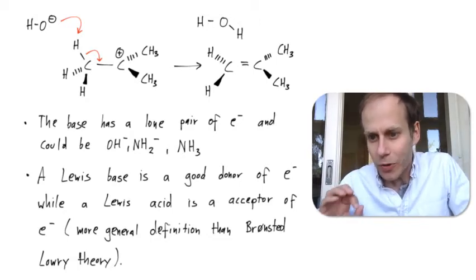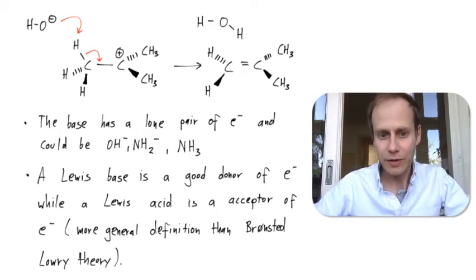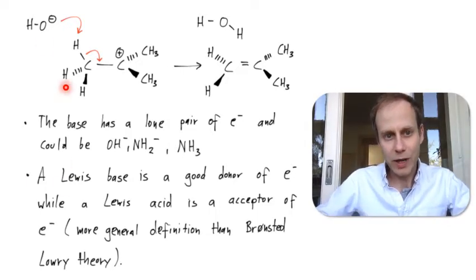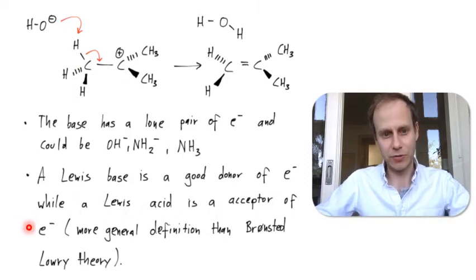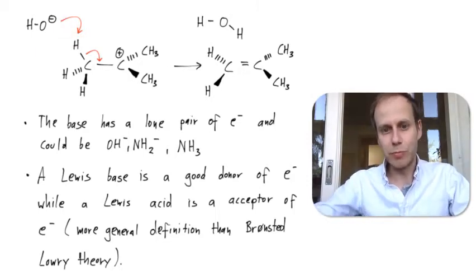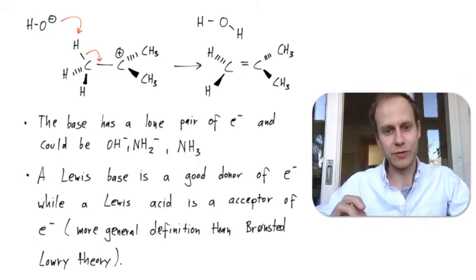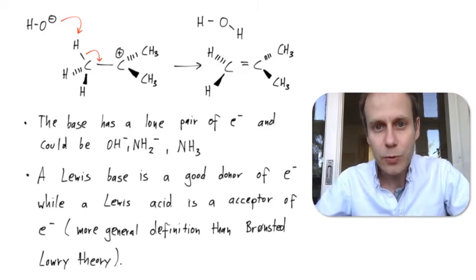This is the more general definition of an acid-base reaction. We learned about the Brønsted–Lowry theory when we talked about acid-base equilibrium, but this is more general. We now call this a Lewis base — a Lewis base is a good donor of electrons — while a Lewis acid, which is the electrophile here, is a good acceptor of electrons. An acid-base reaction can be defined based on proton donation and proton acceptance (Brønsted–Lowry), but also as a donation or acceptance of electrons — a nucleophile–electrophile interaction. That's called a Lewis acid-base interaction.